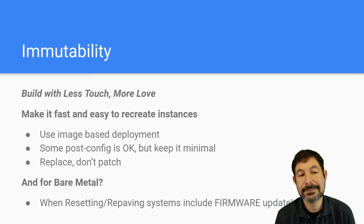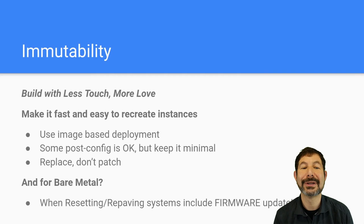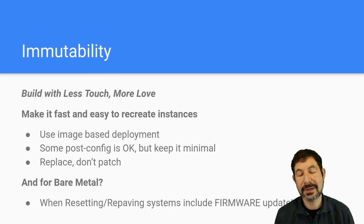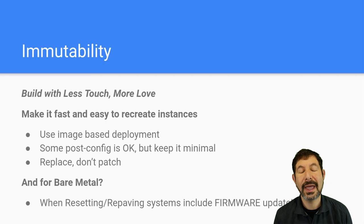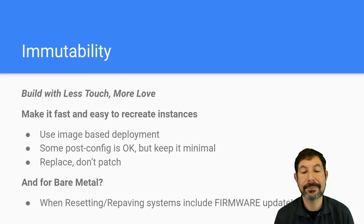Immutability is absolutely critical — less touch, more love is the way I like to think about this. The beauty of immutability, when you get it right: think about deploying an image instead of building an image from configuration. It makes it very fast and easy to recreate instances. You can stamp out and repeat your success much, much faster. You replace instead of patch or change — that means image-based deployments are really important tech. We've been doing this for a long time in the Digital Rebar space. It is a better, faster way to go; it takes a little bit more work upfront. Post-config is okay — keep it minimal, replace don't patch.